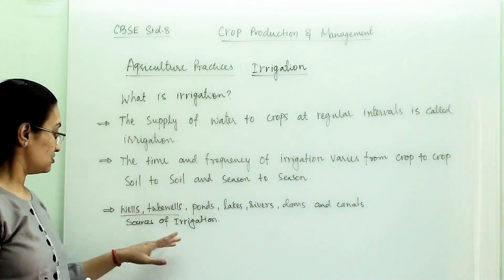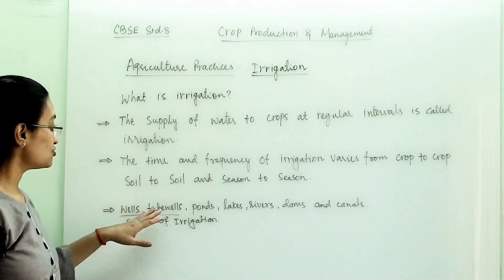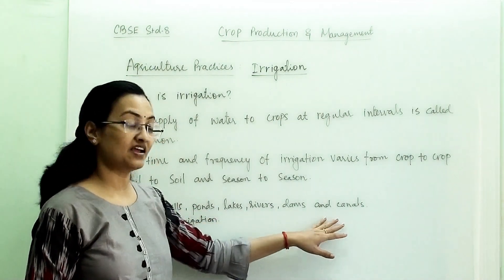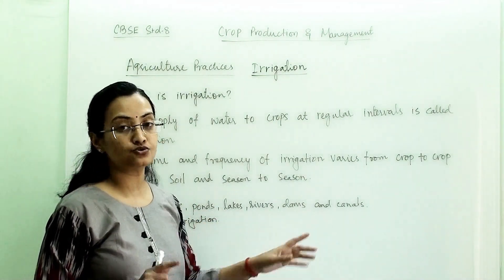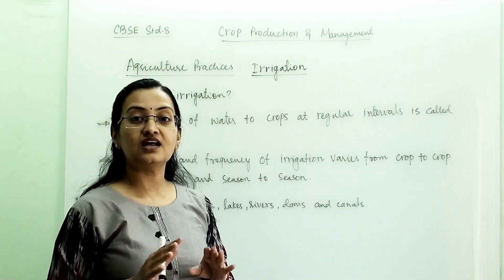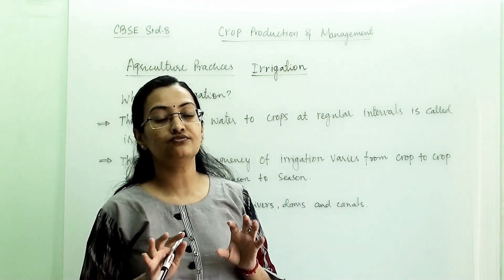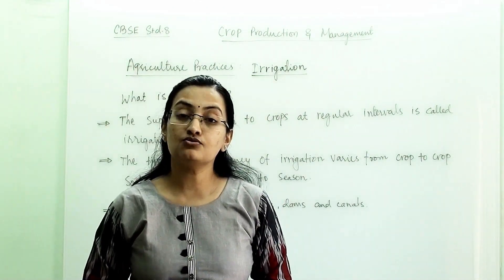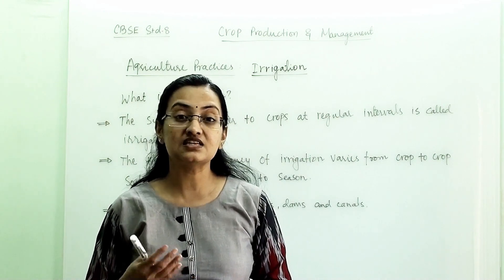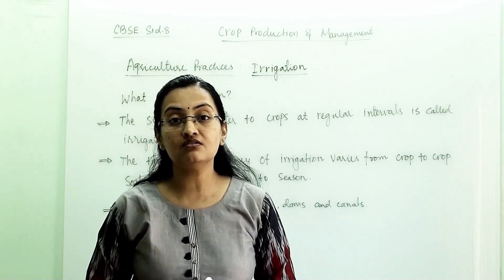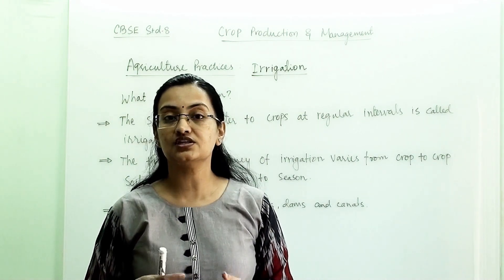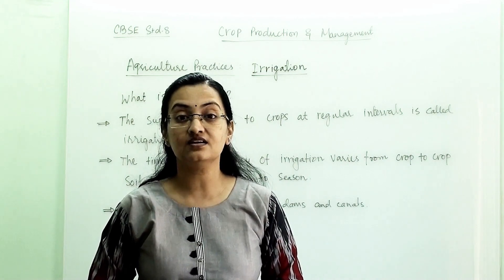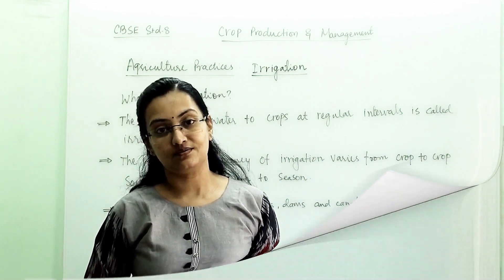Sources of irrigation include wells, tube wells, ponds, lakes, rivers, dams, and canals. There are two types of irrigation systems. Now let us learn about the traditional irrigation system — we will see via pictures how this traditional irrigation system works and how farmers use them.